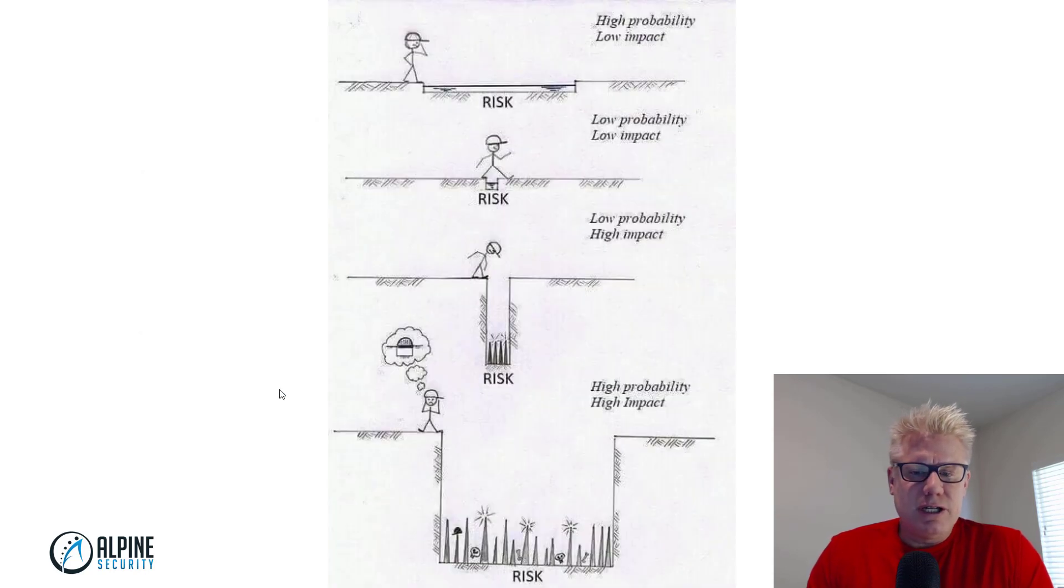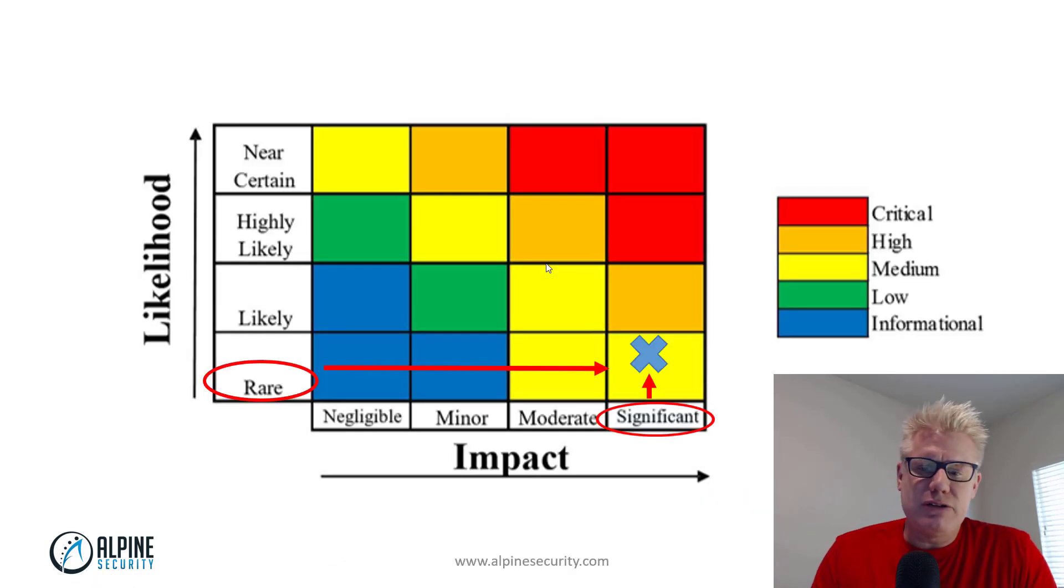If we look at this picture here, on the matrix C, we had a rare likelihood, but a significant impact. So that would be something like this third picture right here. So this would be a medium risk rating according to our matrix C. This third item here would be medium because there's a low probability or a rare likelihood and there's a high impact or a significant impact. So this overall for this one would be medium if we applied that scenario to our risk matrix C right here.